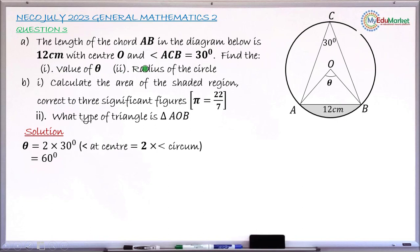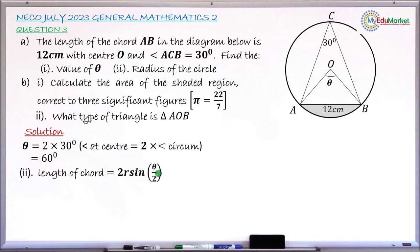For Roman numeral 2, we find the radius using the chord length formula: length of chord = 2R × sin(θ/2), where theta is the angle subtended by the chord at the center. The chord length AB is 12 cm and theta is 60 degrees, so substituting: 12 = 2 × R × sin(60/2).